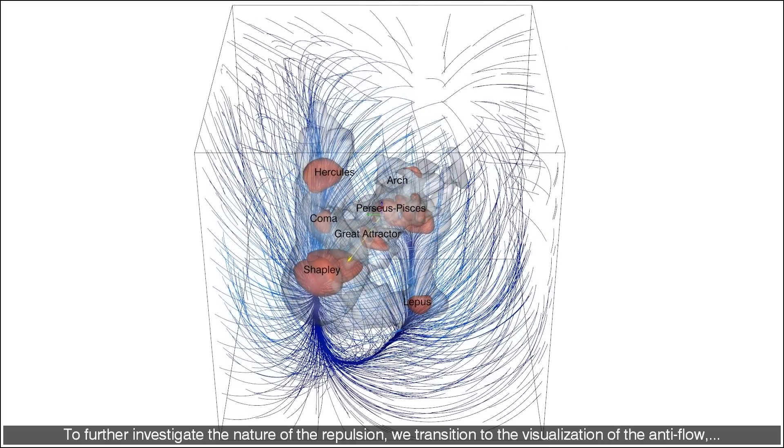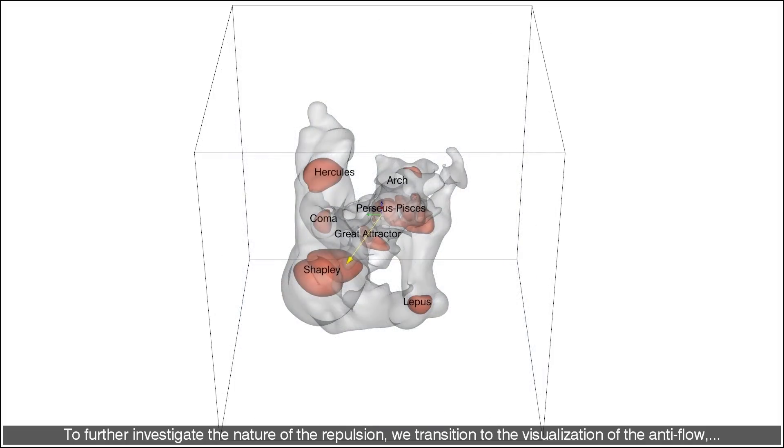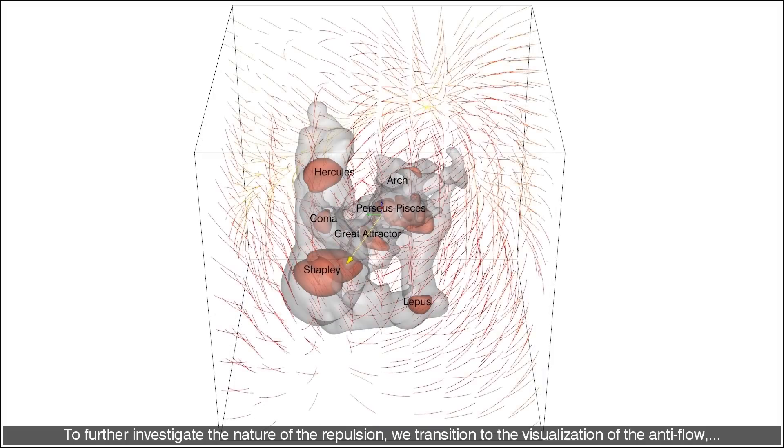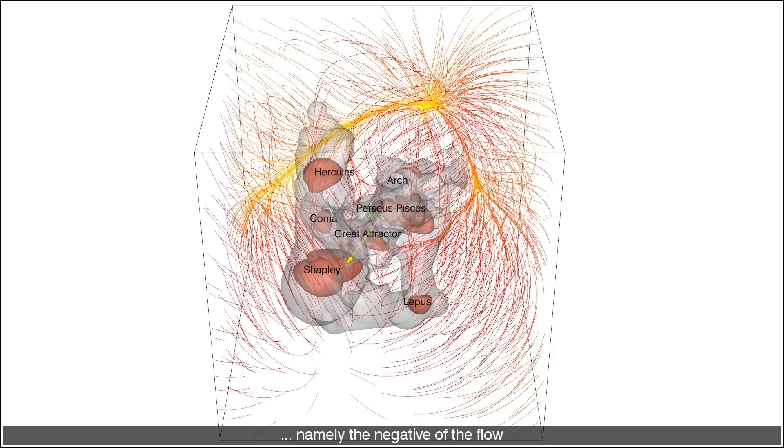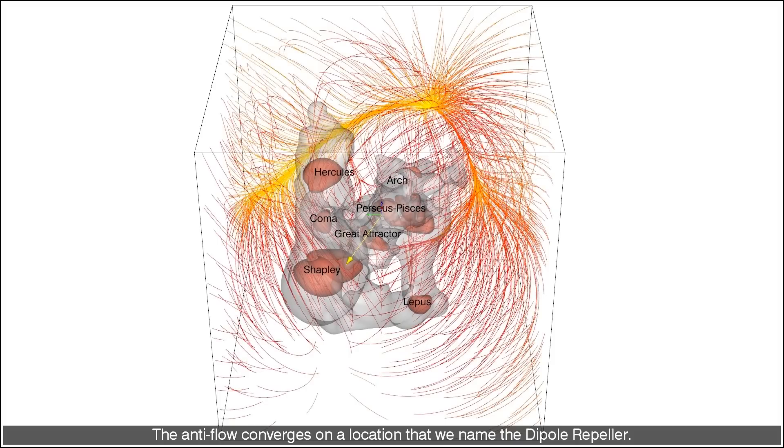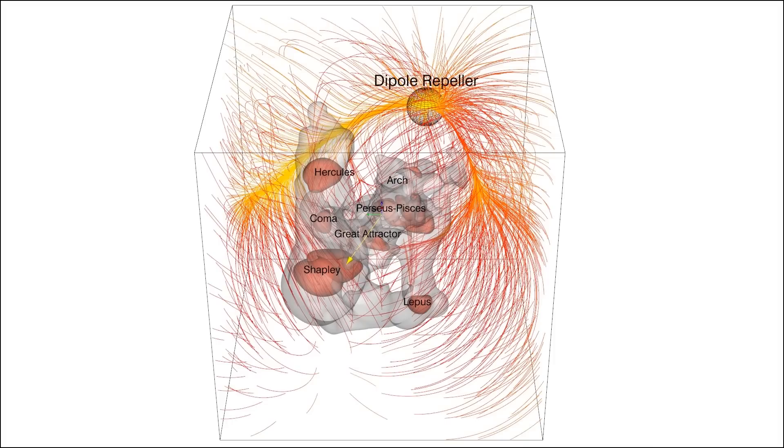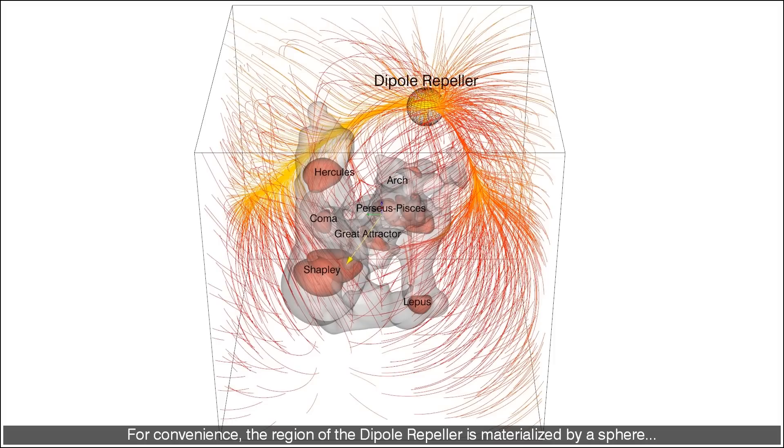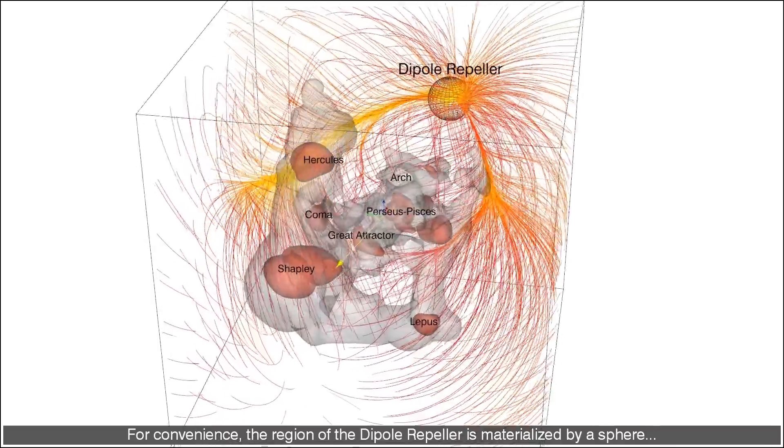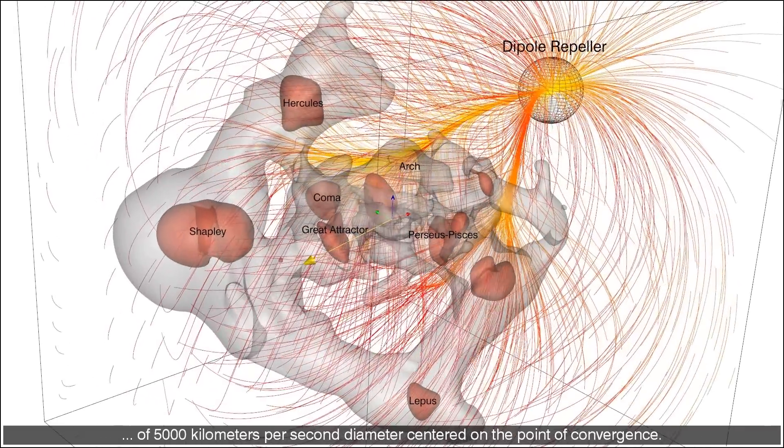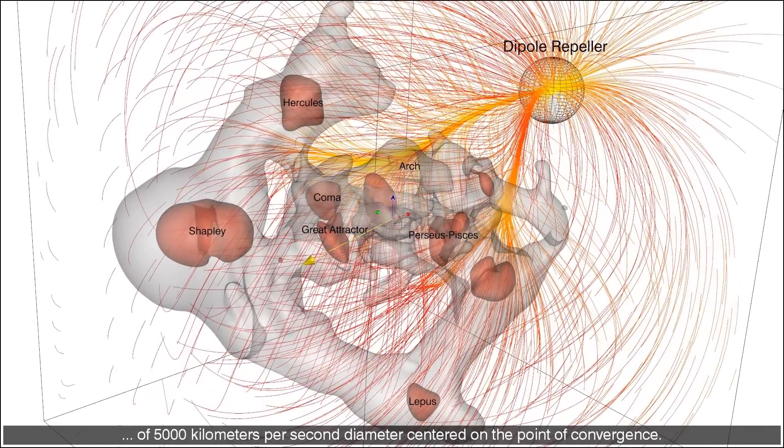To further investigate the nature of the repulsion, we transition to the visualization of the antiflow, namely the negative of the flow. The antiflow converges on a location that we name the dipole repeller. For convenience, the region of the dipole repeller is materialized by a sphere of 5000 km per second diameter centered on the point of convergence.